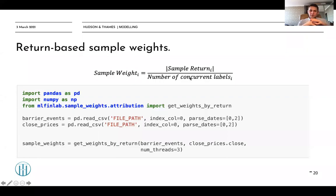Let's take a look at return-based sample weights. The sample weight for label i equals the absolute value of the return generated as a result of trading that label, divided by the number of concurrent labels at time i.